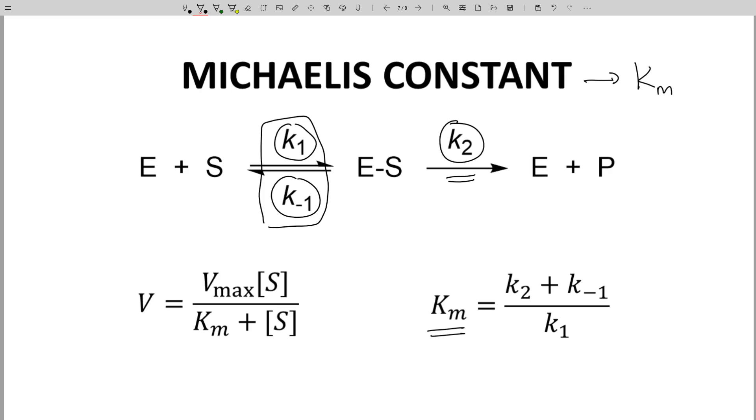Sometimes people say that Km is the affinity of an enzyme for a substrate. That's not really true. The affinity is described by this first equilibrium. Once we add k2 into Km, Km is no longer the affinity. It's similar, but it's not identical to the affinity. It is generally true that substrates with a small Km do have a higher affinity.